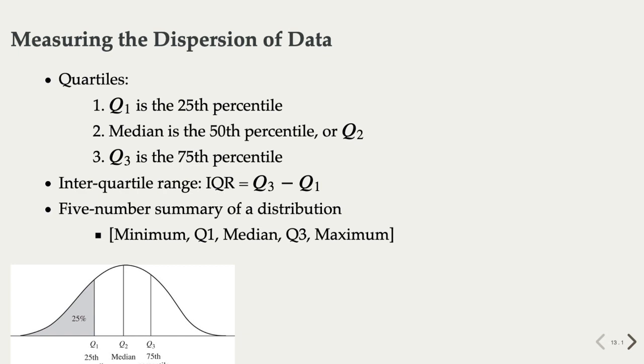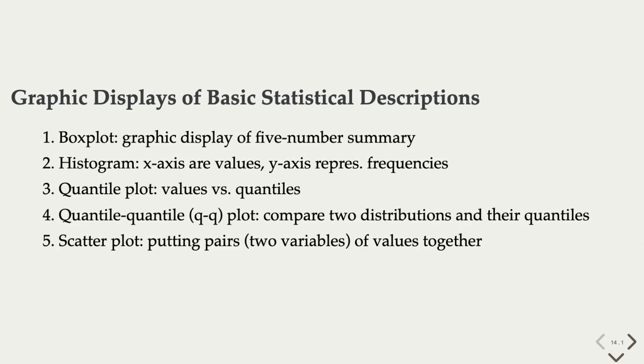Quartiles are useful for measuring the dispersion of data. Q1 is the 25th percentile, Q2 is the 50th percentile or the median, and Q3 is the 75th percentile. Adding the minimum and maximum values to these three, we have the five basic numbers as a summary of a distribution. Graphic presentations of data distribution are often intuitive and helpful, so let's look at some of these tools.